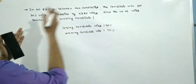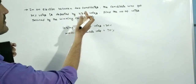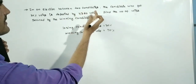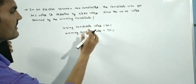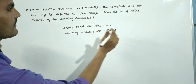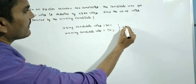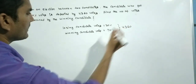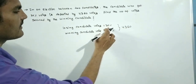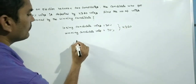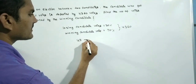The candidate who got 30% of votes is defeated by 4360 votes. This means the difference between these two candidates is 4360. The difference is 40%, so 40% equals 4360.